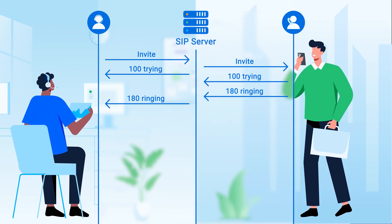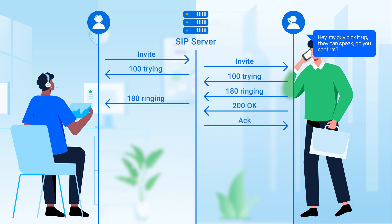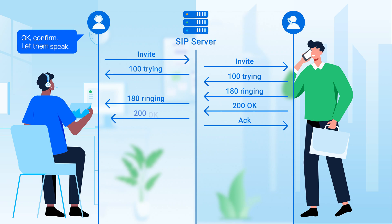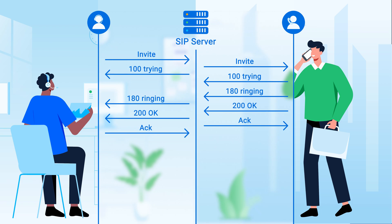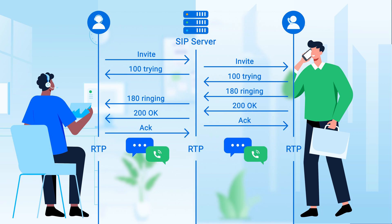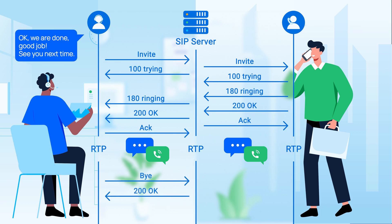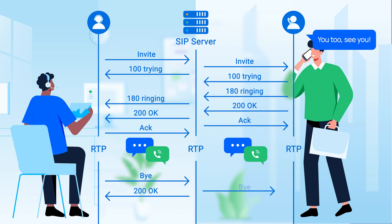Then, if your colleague hears the phone ring and answers it, your colleague's phone will send a notification: "Hey, my guy picked it up. They can speak." Then you confirm — your phone will respond: "Okay, confirmed. Let them speak." This way the call is established and you can start to talk. Your conversation will be flowing between you and your colleague on the network as a multimedia stream. When you finish and hang up the call, your phone will send out a signal that says: "Okay, we're done. Good job. See you next time." And your colleague's phone will respond: "You too. See ya."